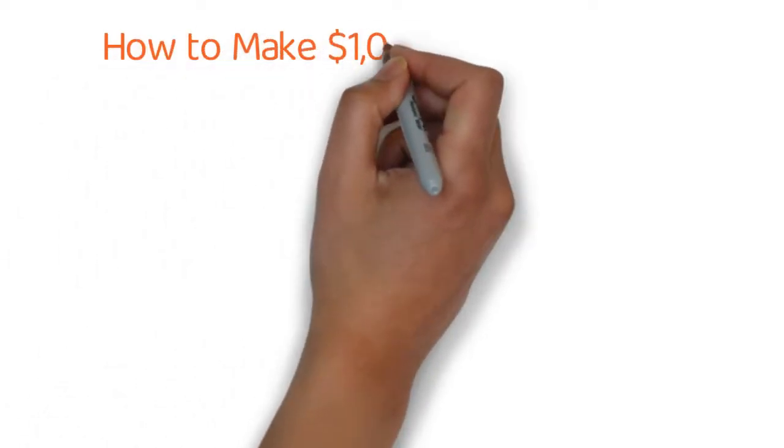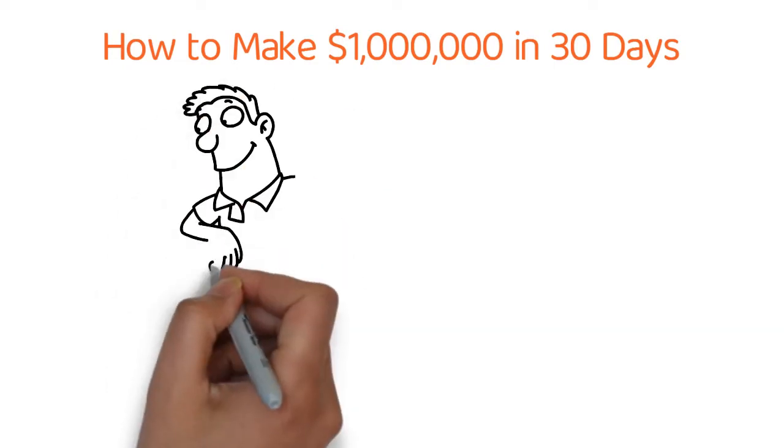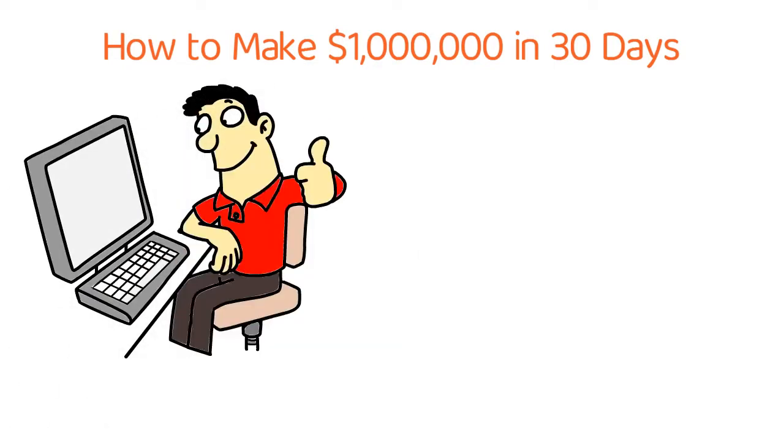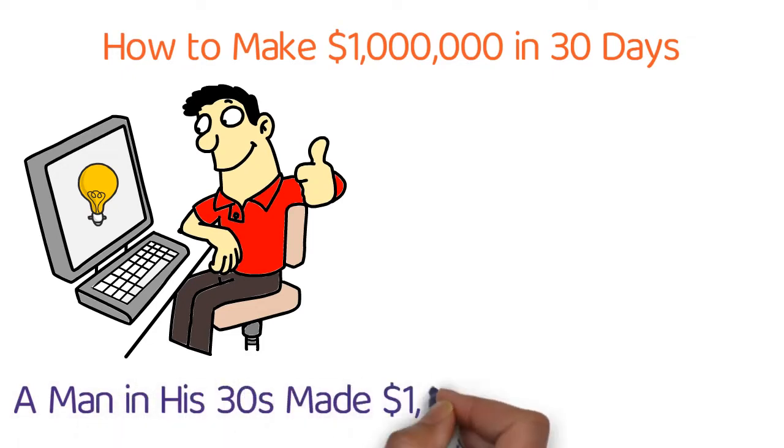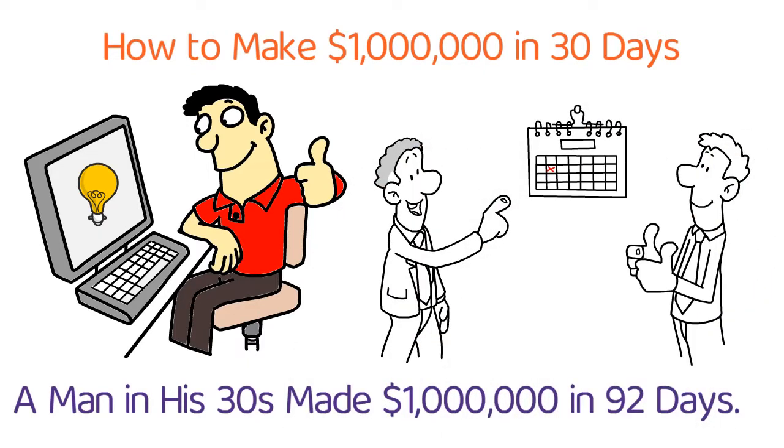Let's talk about how to make 1 million dollars in 30 days. Make sure you stay until the very end where I give you a real-life example of how a man in his 30s made 1 million dollars in 92 days. I know it's not exactly 30 days, but it's still pretty awesome and you get the idea.